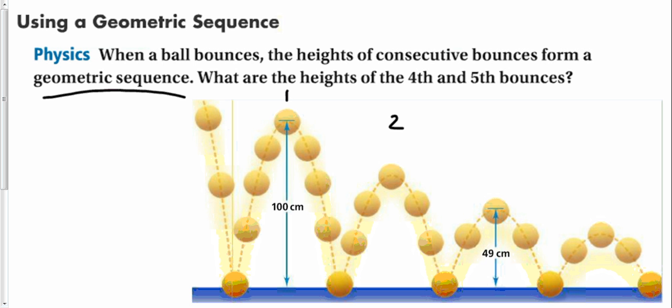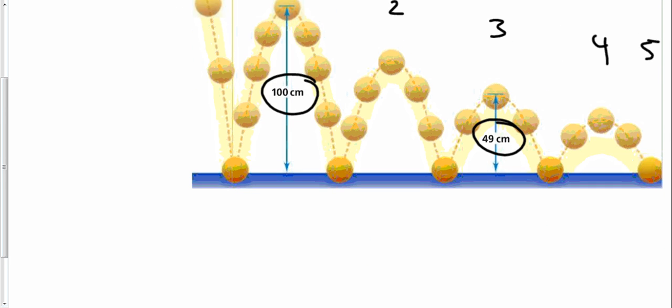What are the heights of the fourth and the fifth bounce? So, here's the first, second, third, fourth, and then the fifth is not pictured. We know what we need to know. We know our initial condition. We know the third bounce. So, let's form, let's set up an explicit formula.